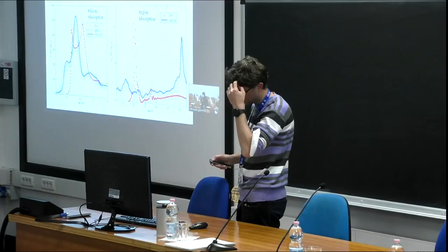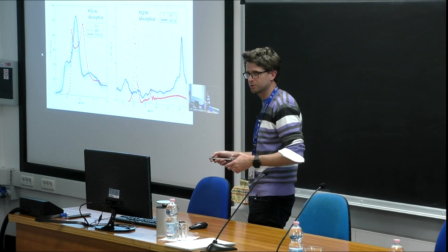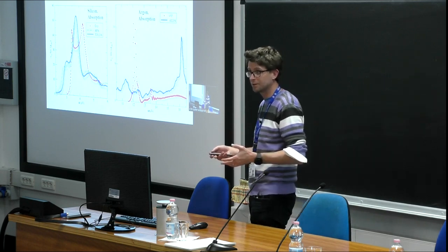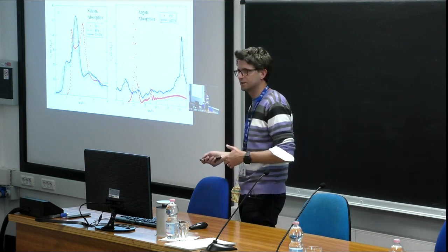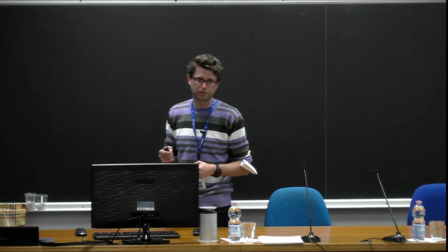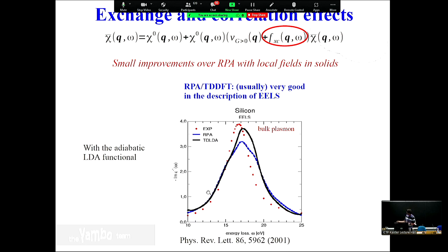The answer: for absorption, RPA is not a good description - we are missing excitonic peaks. But for the screening used in GW, what matters most is a good description of the plasmonic screening, which is more closely related to EELS. As I showed, the plasmonic peak is very well described at the RPA level. So it's not good for absorption but it doesn't mean it's bad in general. It has a lot of good physics, which is why we can use it as a starting point for GW and BSE.